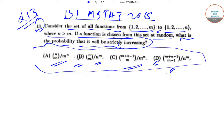What we have to consider is that we have to consider the set {1, 2, ..., m} and the set {1, 2, ..., n}, where n is greater than m. Now we have to choose functions from those sets which are strictly increasing and we have to find out the probability. What we have to do is find the total number of functions available.